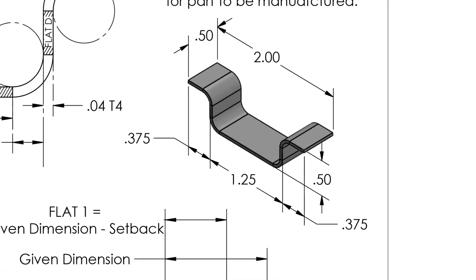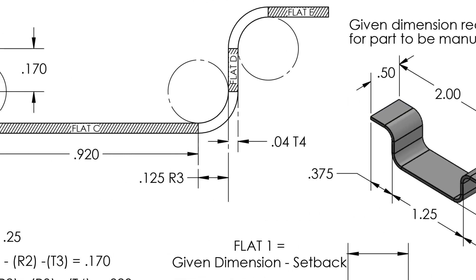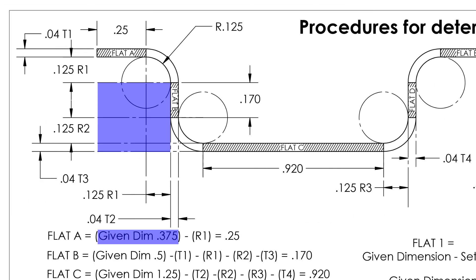For example, in order to calculate the length of flat A, the given dimension is from the inside of the bend. In this case, flat A equals the given dimension of 0.375 minus the bend radius of 0.125, and that equals 0.25.